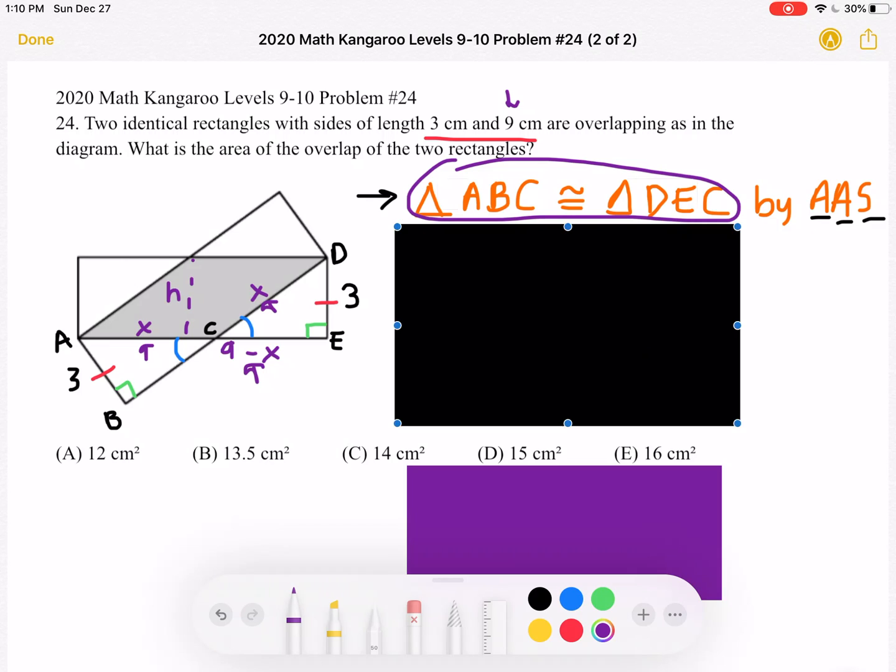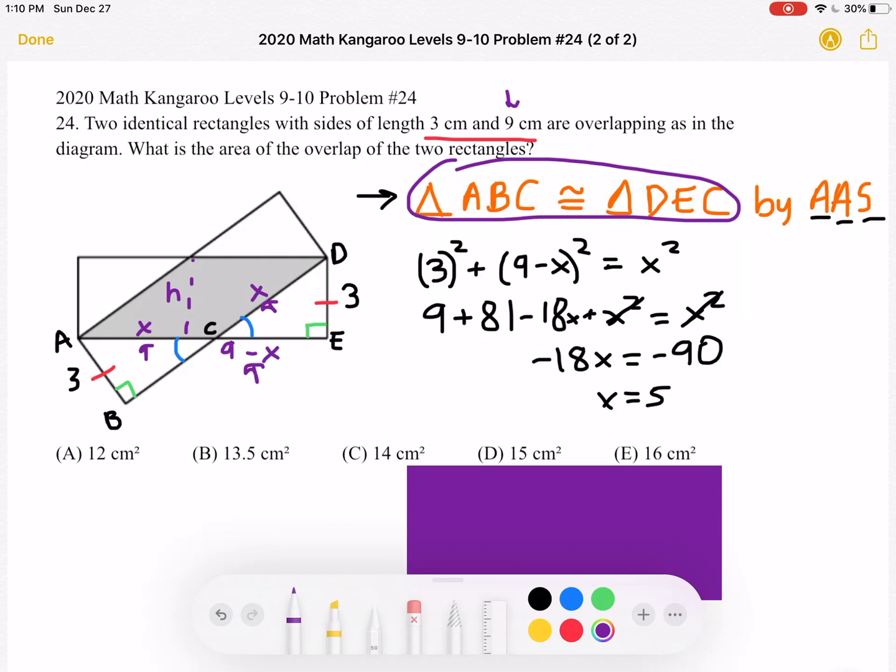So now we have an equation by using this triangle over here. We can use Pythagorean theorem because we have a right triangle. We know DE, one of the legs, is 3.